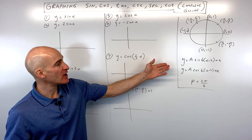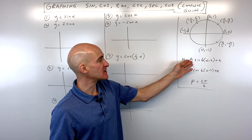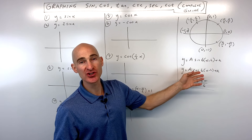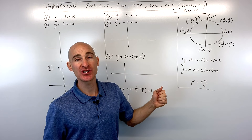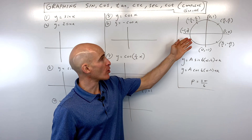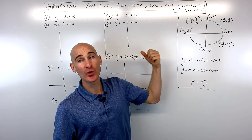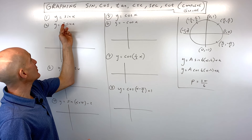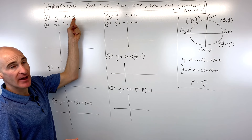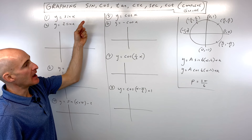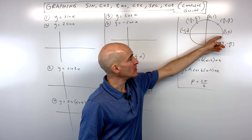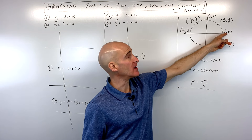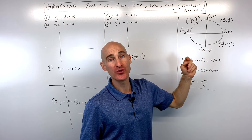The first thing we want to talk about is how to graph the basic sine graph and cosine graph, and then we're going to get into the transformations — shifting, stretching, compressing, etc. We're also going to reference the unit circle and I'm going to show you where these graphs come from. Starting with the sine graph, we're going to graph y equals sine of x. When you want to find the sine value, you look at the y-coordinate of the point on the unit circle.